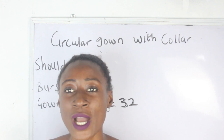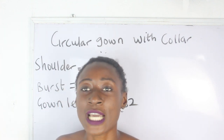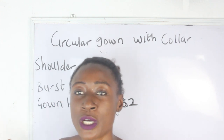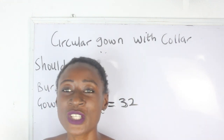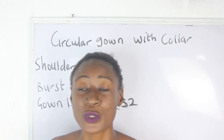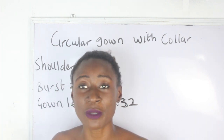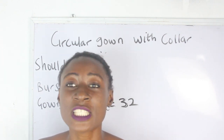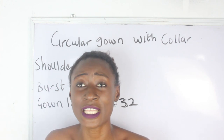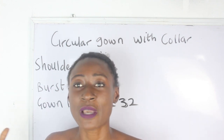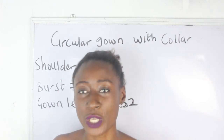So what are the basic measurements required in order for you to achieve your circular dress with a collar? We have our shoulder measurements, bust, and our gown length. You will also discover that we don't have hip or waist measurements, because this form of dress is usually a very free dress. Even your bust measurements, you are going to be adding enough allowance so that you can have a free effect.